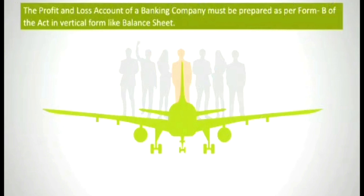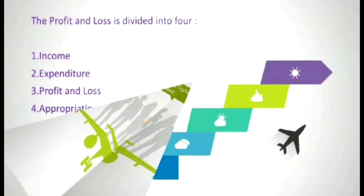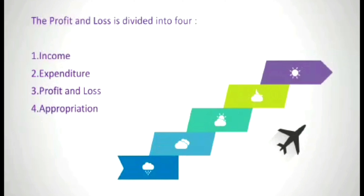Next are the items to be recorded in the profit and loss account. The profit and loss account of a banking company must be prepared as per Form B of the Act in a statement form like a balance sheet. It is divided into four categories: Income, Expenditure, Profit and Loss, and Appropriation.